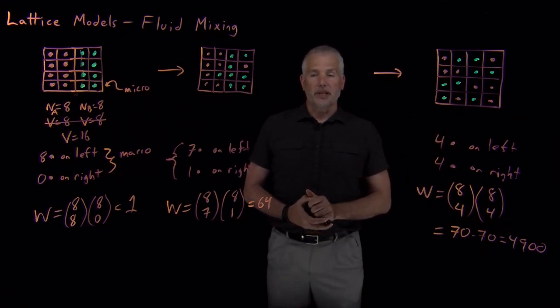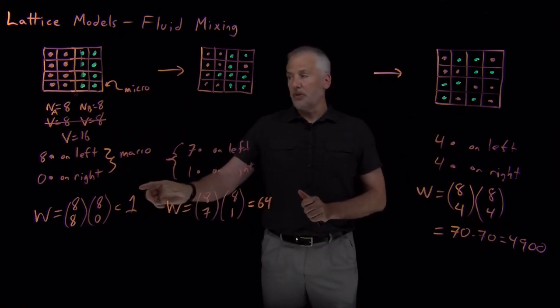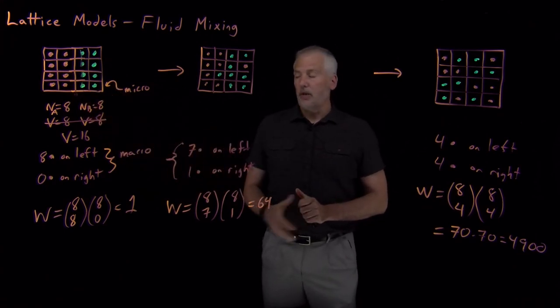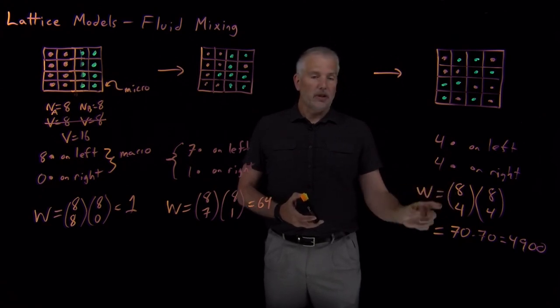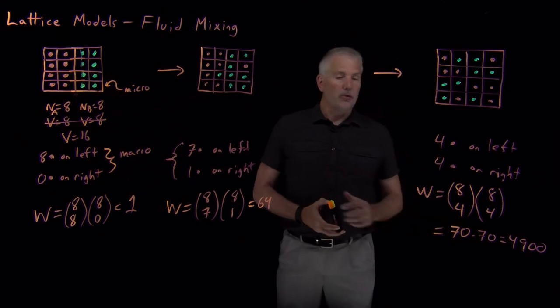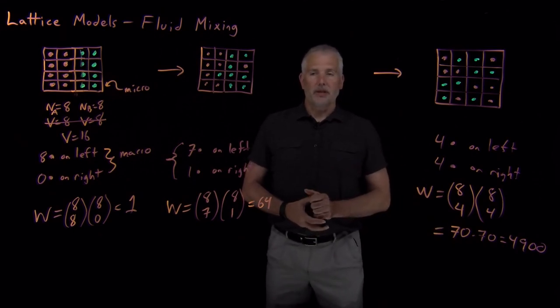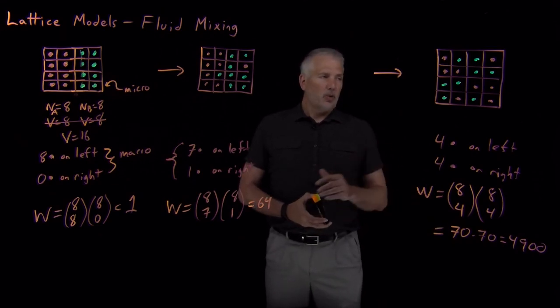It's not guaranteed that the fluids will mix together. It is possible to find a configuration that represents a separated configuration. But again, the larger the system gets, the larger these values of N that I'm taking factorials of, the larger this number will get and the more overwhelmingly likely it will be that the fluids mix. And it's also worth pointing out that, again, because we haven't built any chemistry into this model,